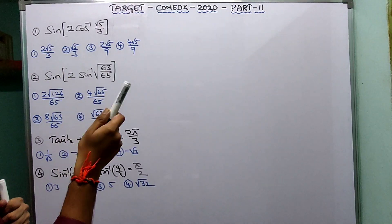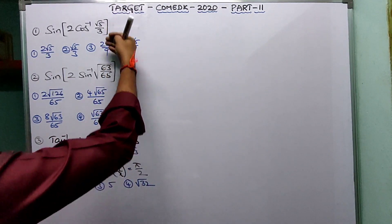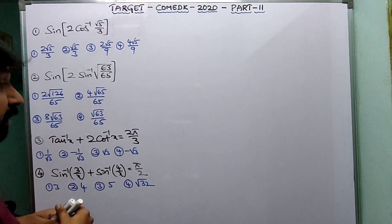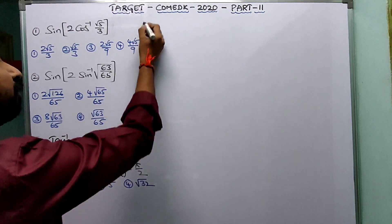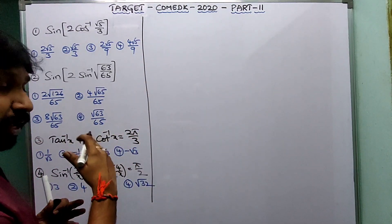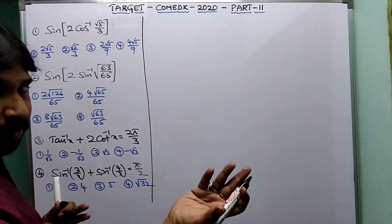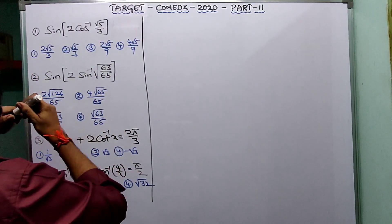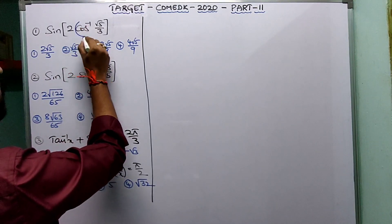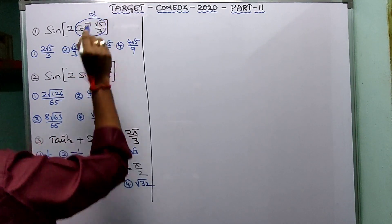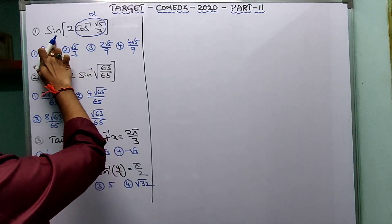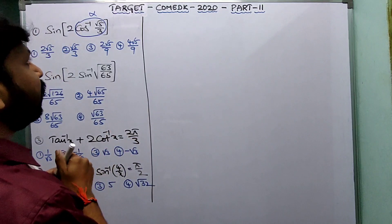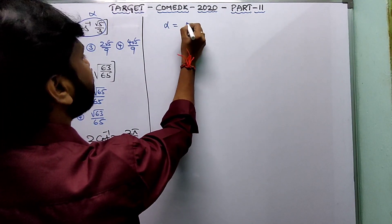First question: find sin(2·cos⁻¹(√5/3)). These kinds of questions are very important from previous examination papers, as the same model may repeat. Whenever this kind of question is given, a very simple logic applies: let this part be called alpha. Then sin(2α) uses the formula 2·sinα·cosα.